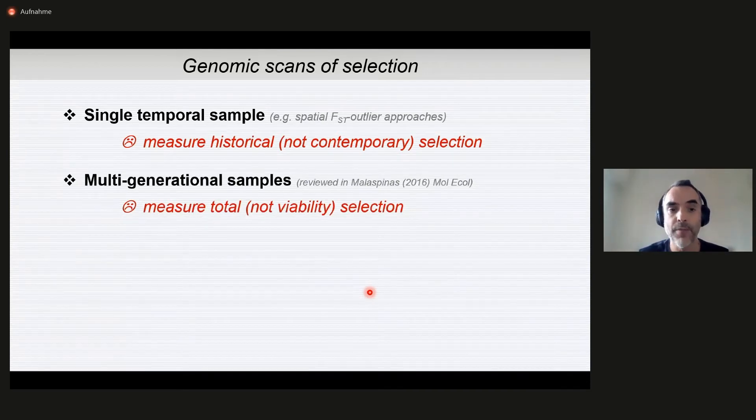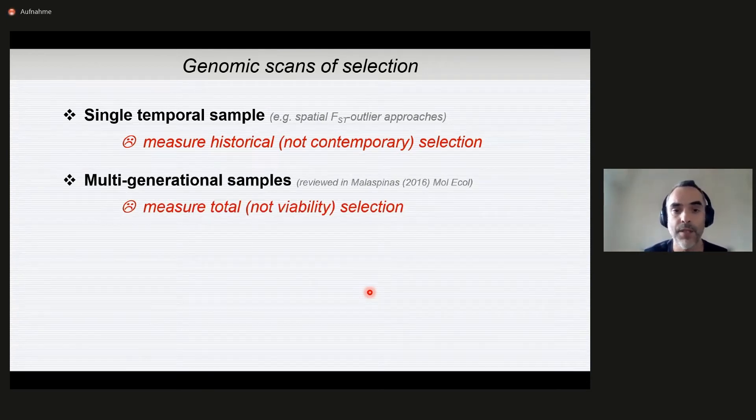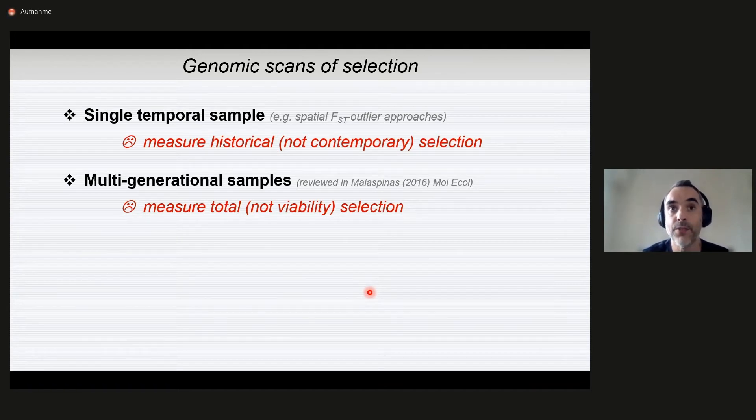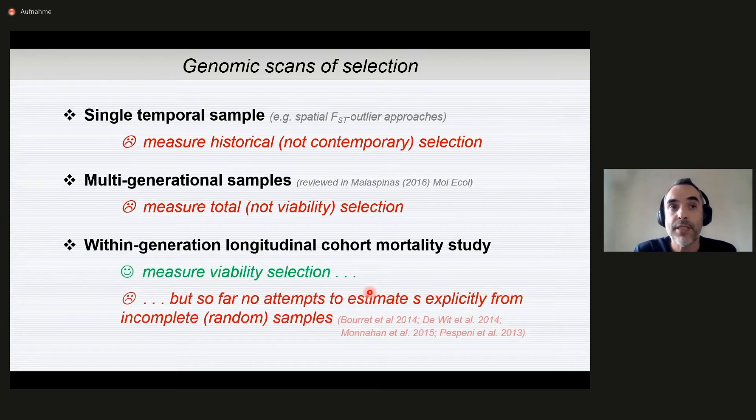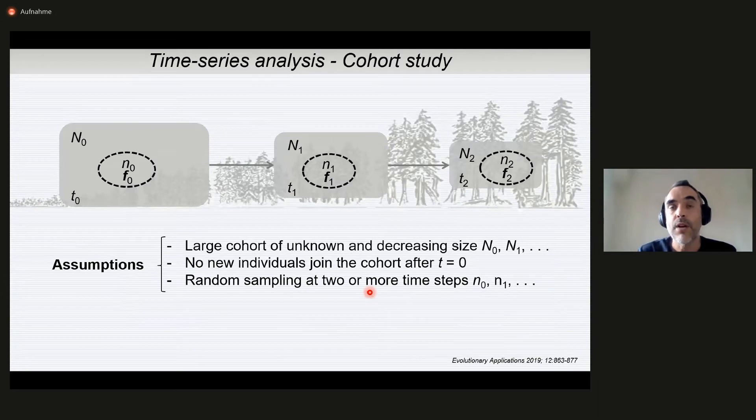Then we have a different category of methods that use multi-generational time series data. These methods measure also total selection. Even if they could focus on only two generations, which is hard, normally they need many more generations to be powerful enough. What we need is a method that can take advantage of within generation longitudinal cohort mortality studies. In this case, some methods have been applied and they can measure contemporary viability selection. But so far, these methods have not attempted to estimate explicitly selection coefficients, but rather only to test the null hypothesis of neutrality.